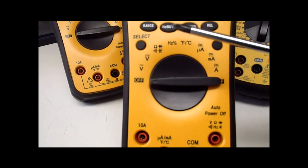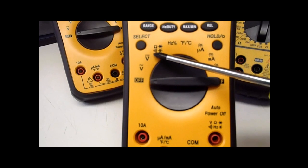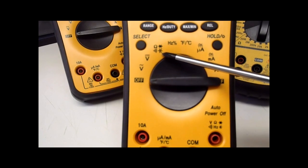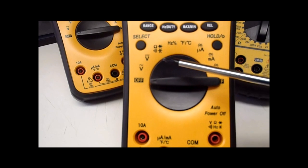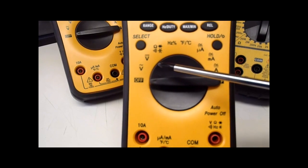But the features you should look for are continuity and capacitance are really handy nowadays with our electronics, and they're pretty well an essential part of a multimeter nowadays.